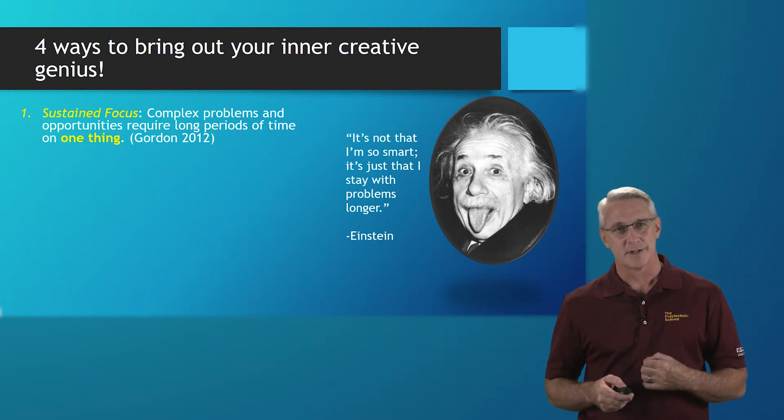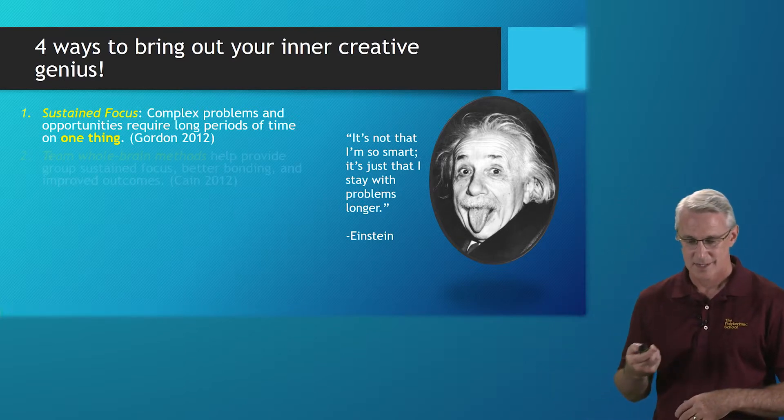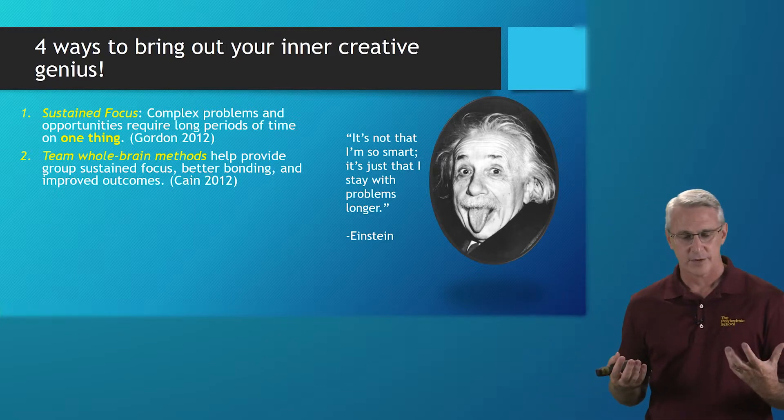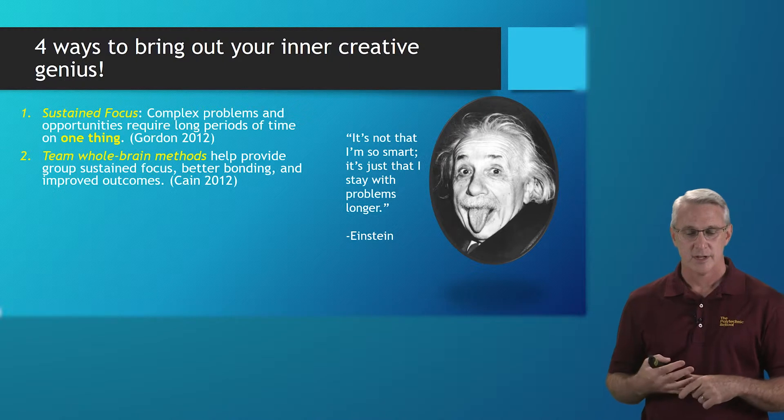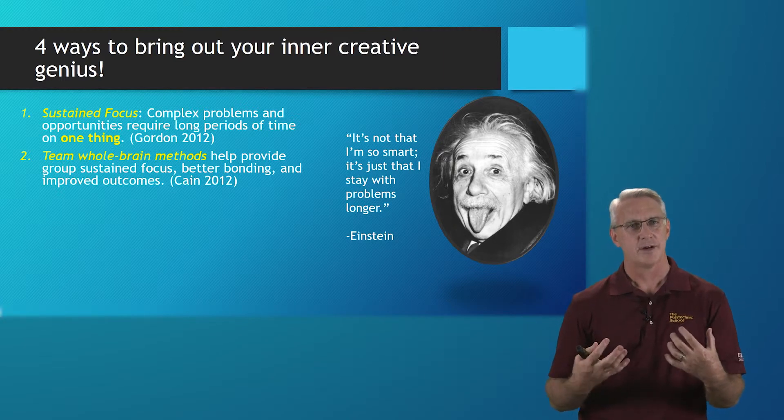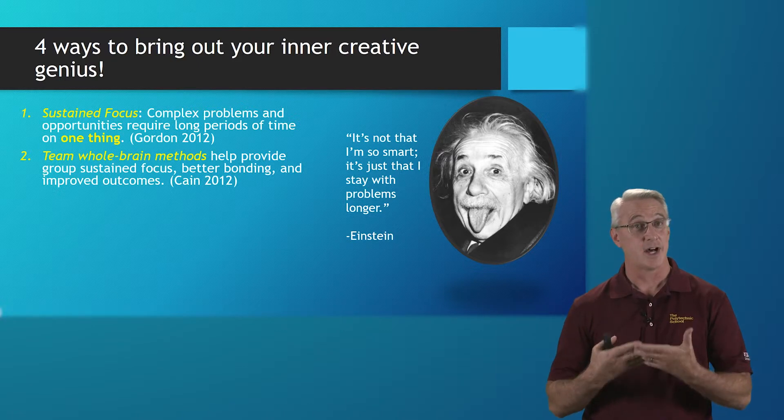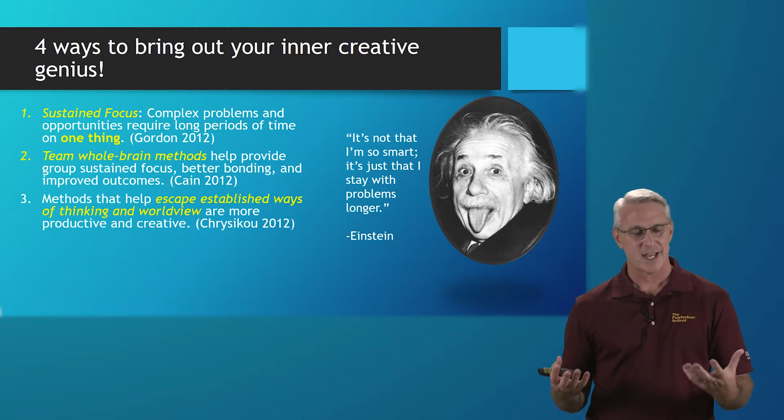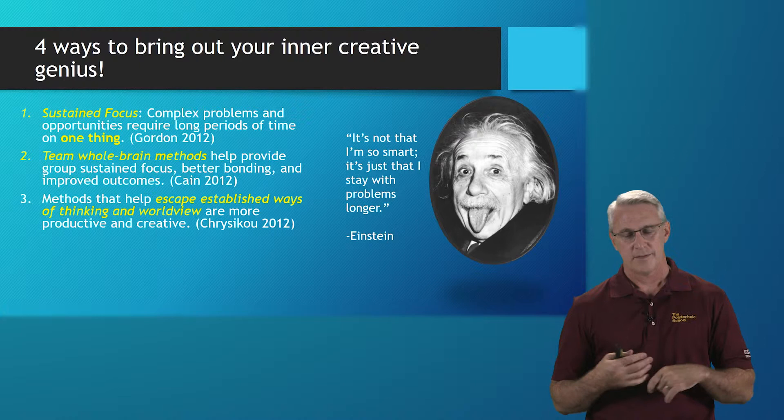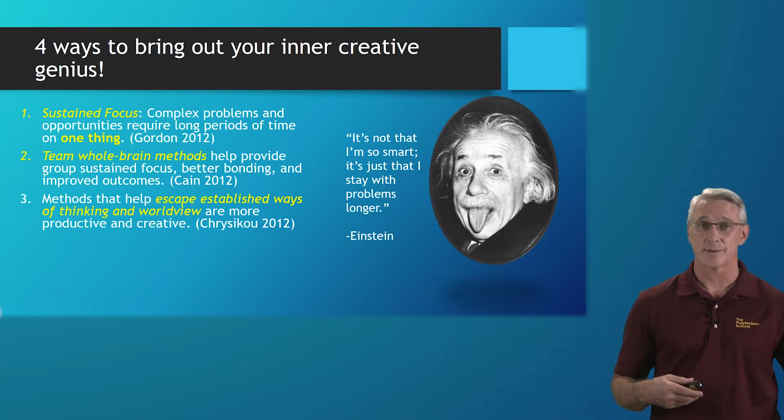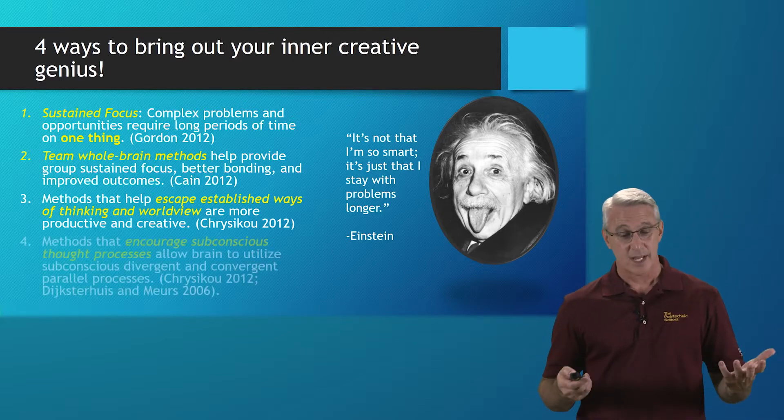As Einstein would say, it's not that I'm so smart, it's just that I stay with problems longer. That's really kind of a testament to that. Elon Musk talks about the same types of things with his companies too. Team whole brain methods can help provide a group sustained focus, better bonding and improved outcomes. For a team really to work, they have to have that bonding, that trust there between them to get improved outcomes. Methods that can help escape established ways of thinking and worldview become more productive and creative than doing the same old, same old. That's again supported by our research.